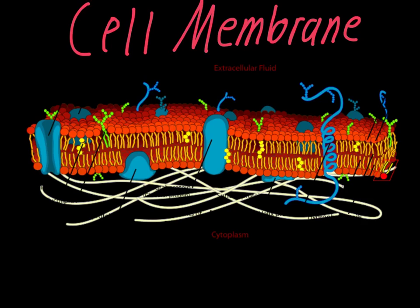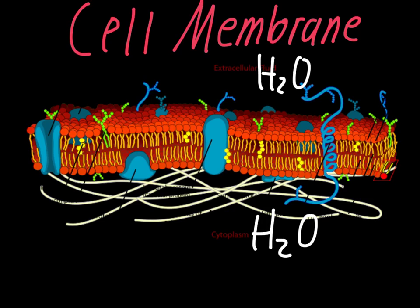The ones that you're seeing all over the place — this one here is boxed off on the side — they have two parts to them. There's a circular head portion and these two little tails. Those are called phospholipids. Those are what make up most of the inside and the outside of the membrane, and they're set up in what's called a phospholipid bilayer. You can see there's a layer on top and a layer on the bottom. Up top it says extracellular fluid — that's the fluid outside of the cell — and down here is the cytoplasm. Cells are usually in water, so there's water on the outside and water on the inside as well.